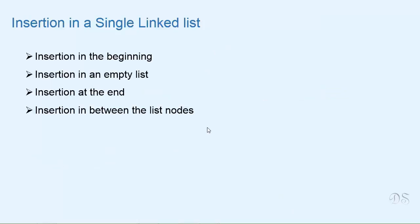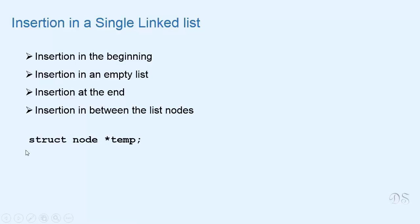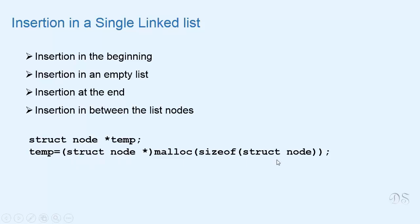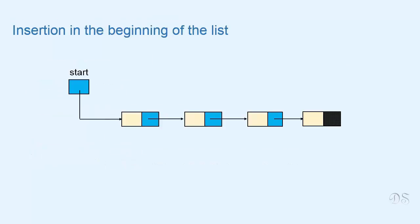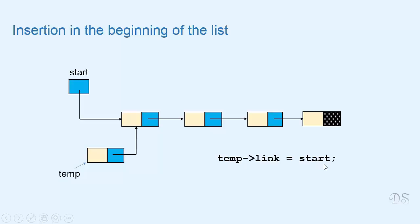These are the different cases of insertion in a linked list. Whenever we insert a new node, we declare a pointer of type struct node, allocate memory using malloc, assign the address to temp, and initialize the info part. To insert a new node at the beginning: the new node must become the first node, so we write temp->link = start (making temp's link point to the current first node), then start = temp (making start point to the new node).